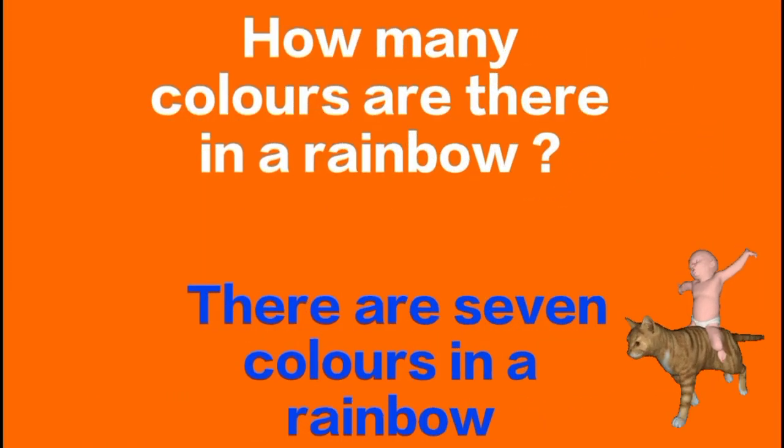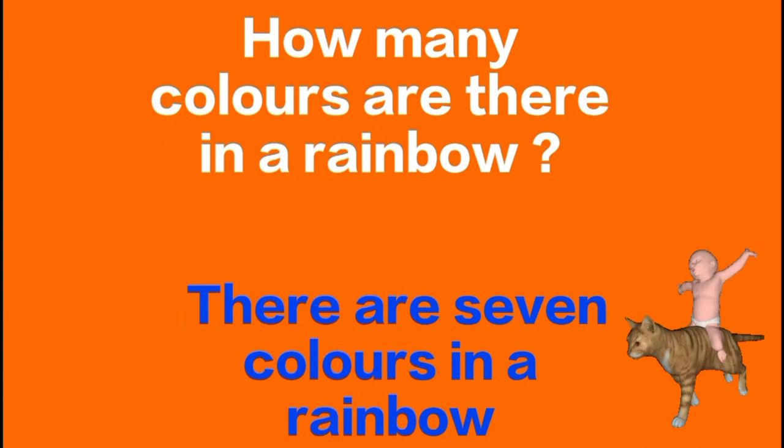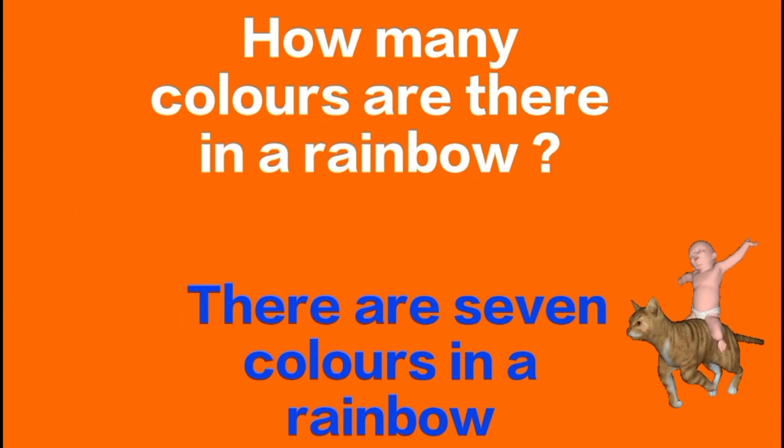How many colors are there in a rainbow? There are seven colors in a rainbow.